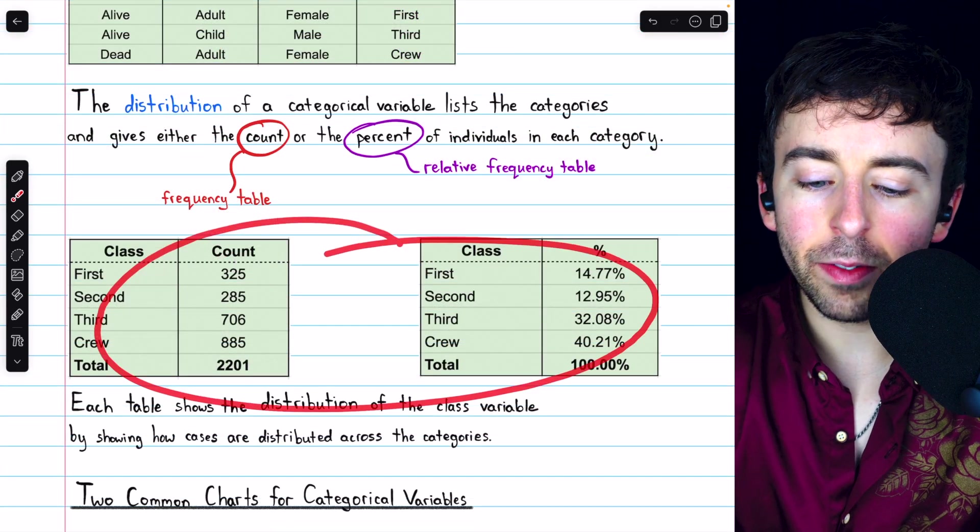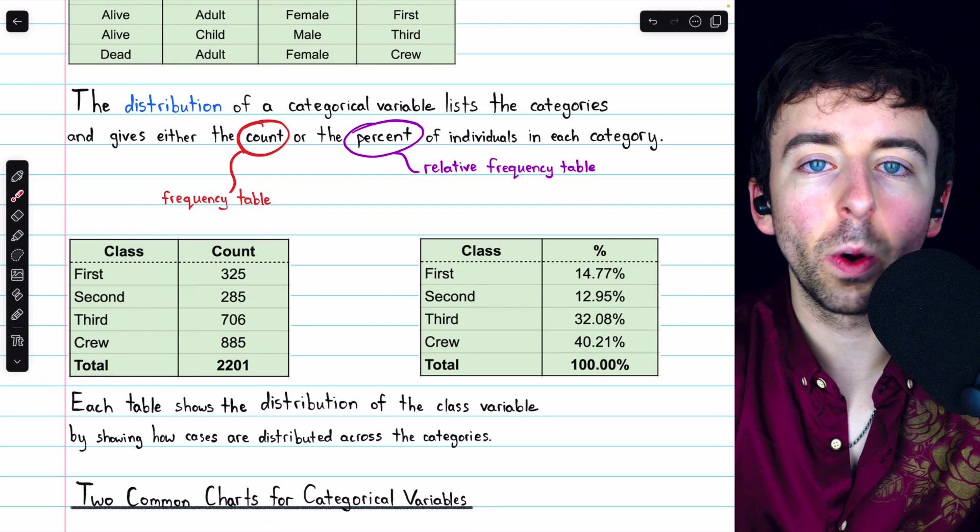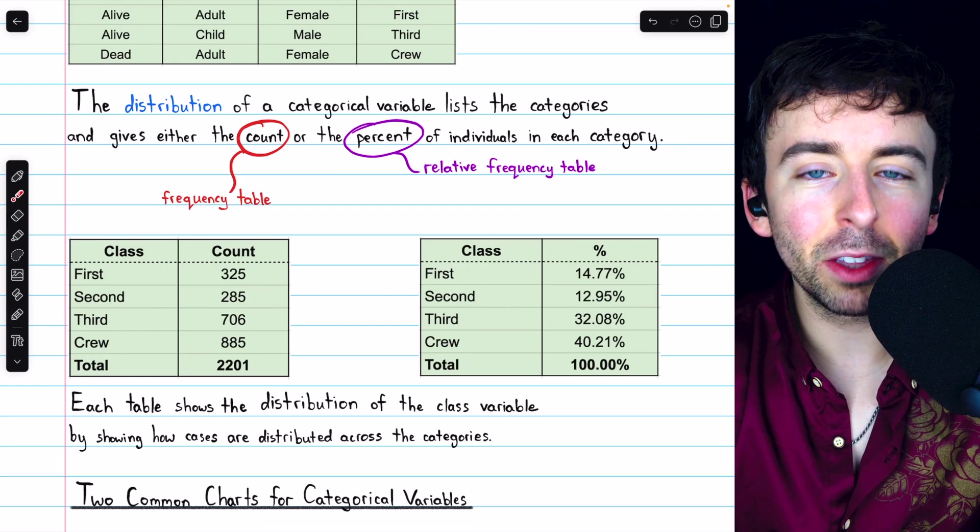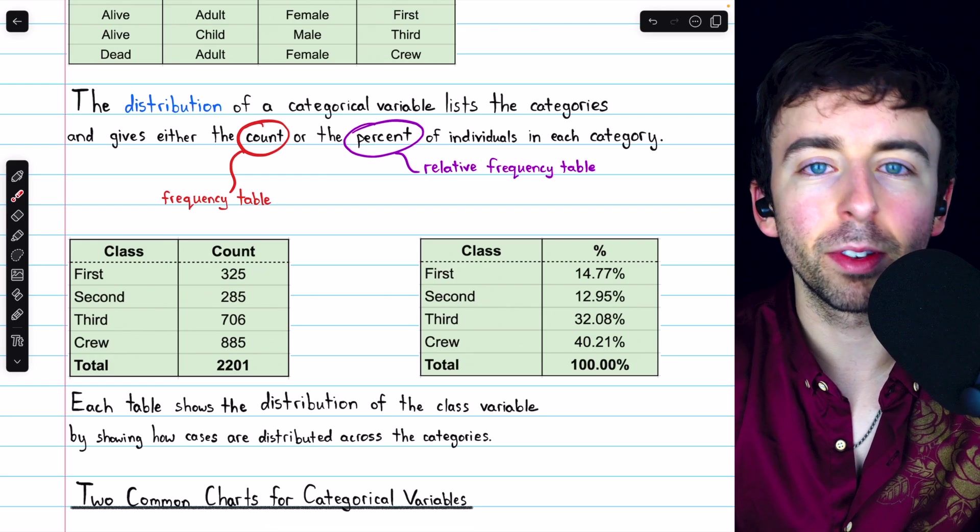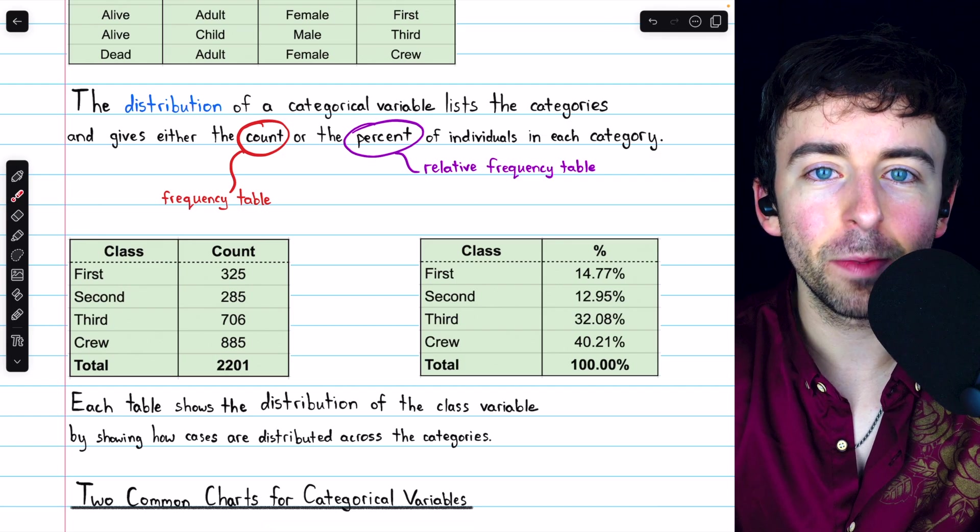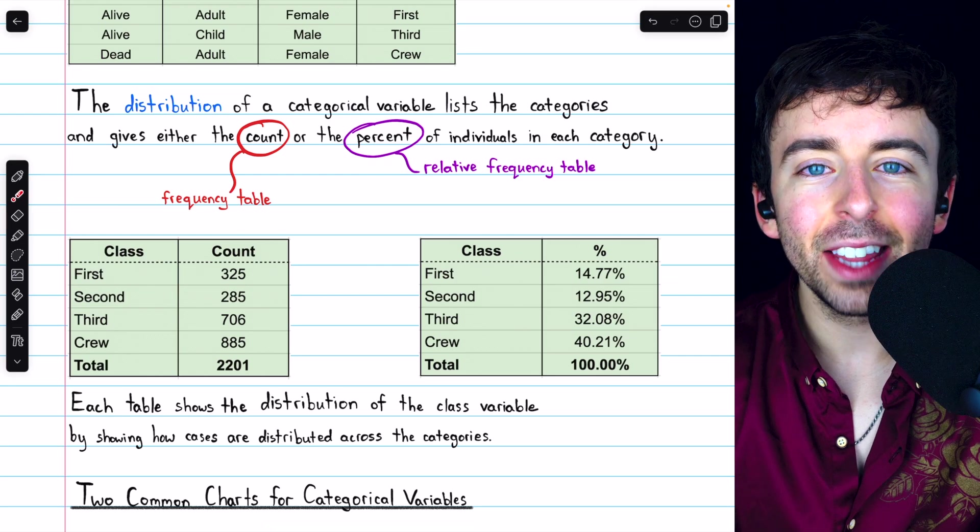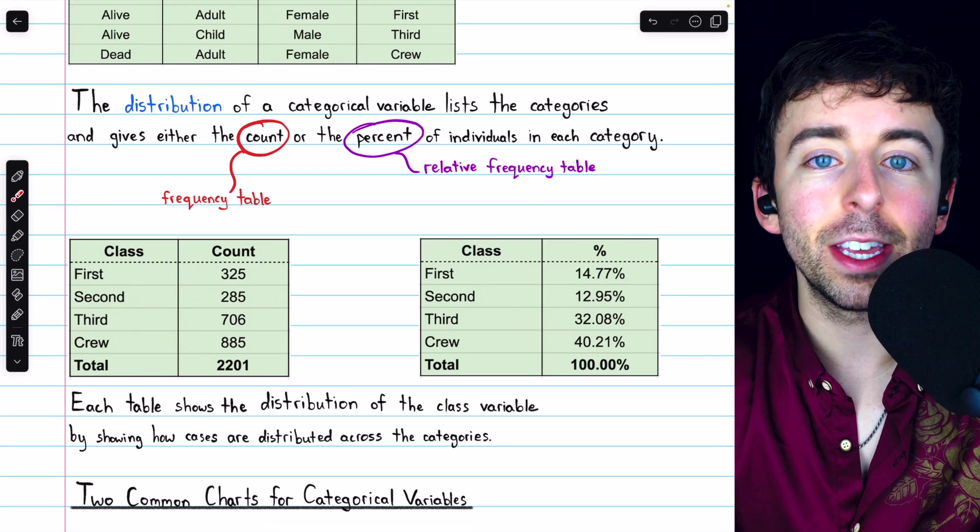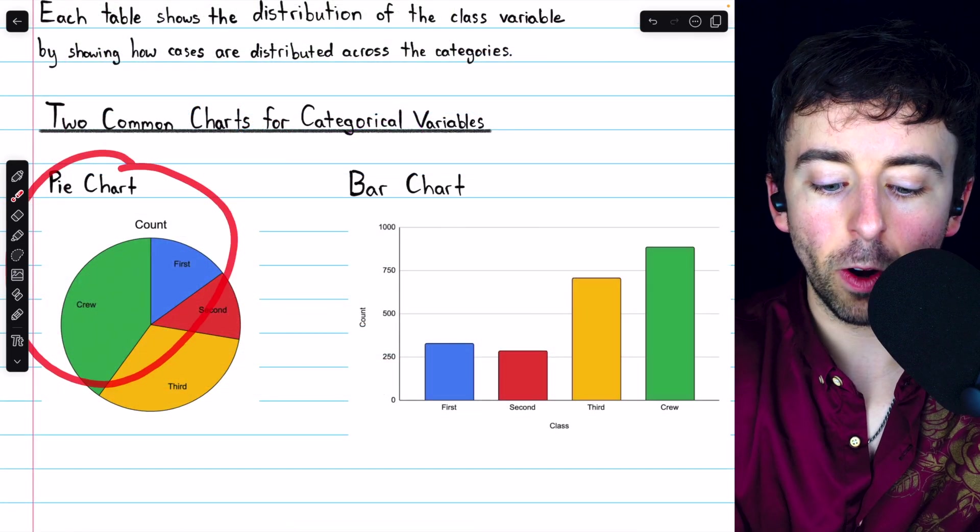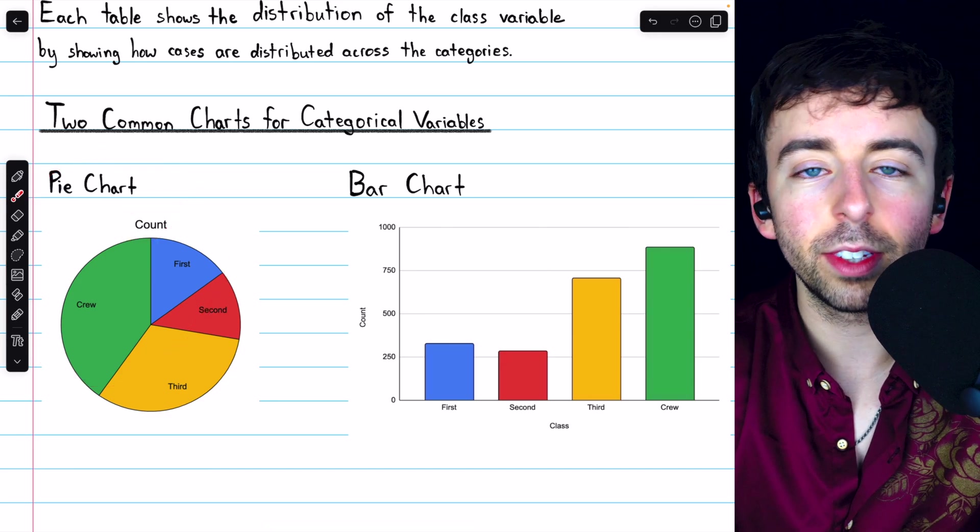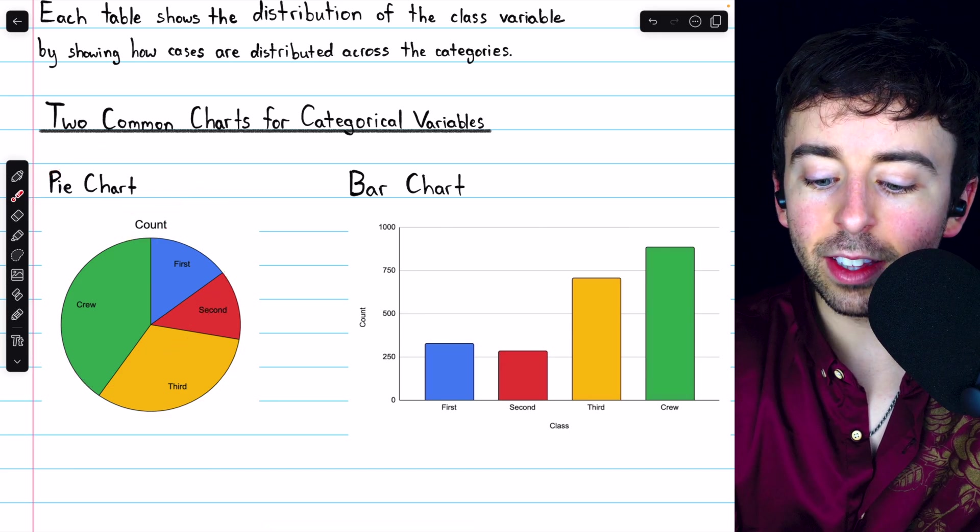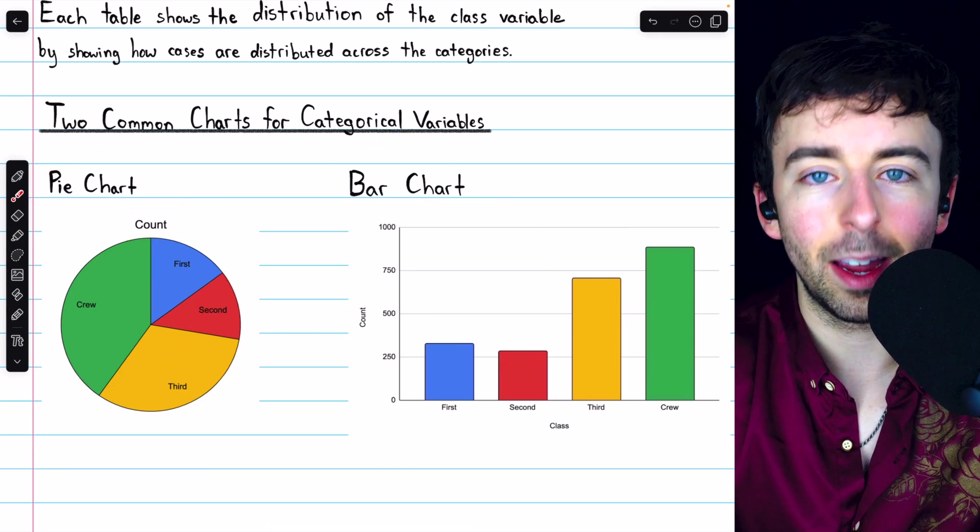Both of these tables can give us a good idea how a categorical variable is distributed, but there is still room for improvement. There's some visual flair lacking here. So let's look at two common types of charts for categorical variables. These are the pie chart and the bar chart.